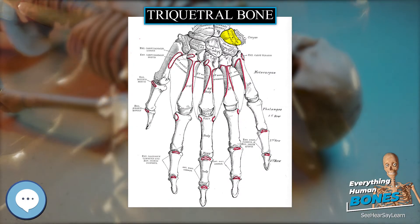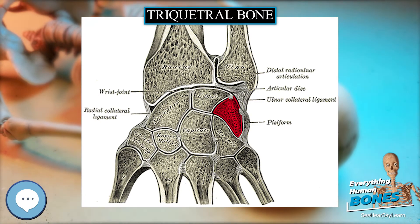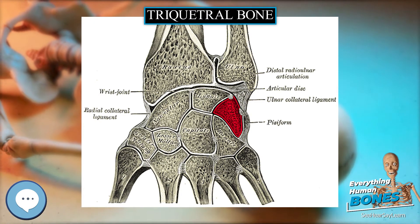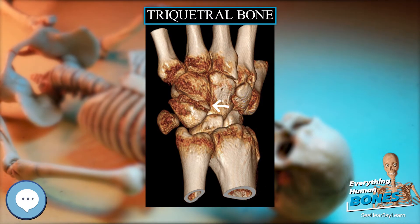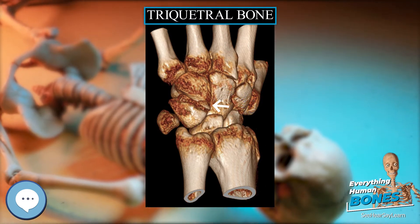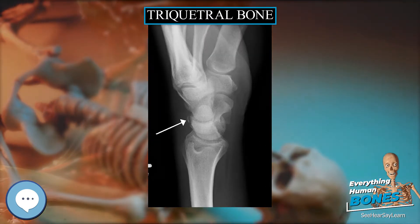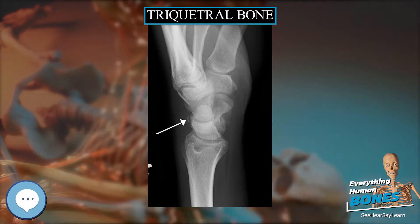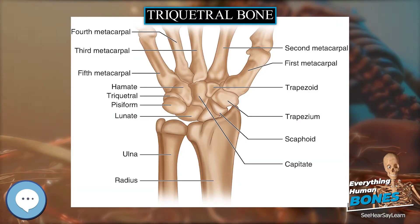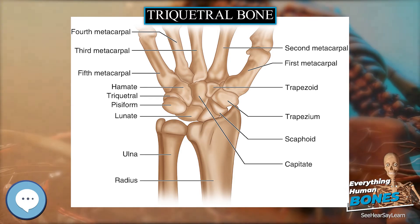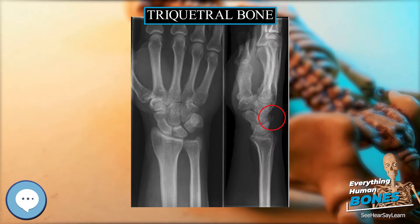The triquetral bone may be distinguished by its pyramidal shape, and by an oval isolated facet for articulation with the pisiform bone. It is situated at the upper and ulnar side of the carpus. To facilitate its palpation in an exam, the hand must be radially deviated so that the trichadrium moves out from under the ulnar styloid process. The trichadrum may be difficult to find, since it also lies under the pisiform.